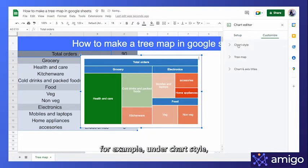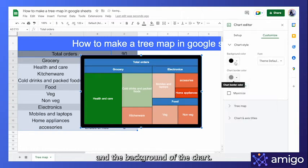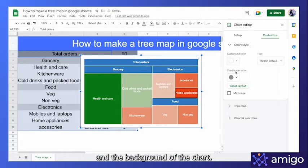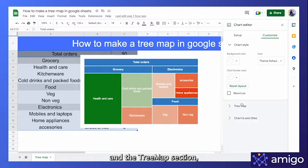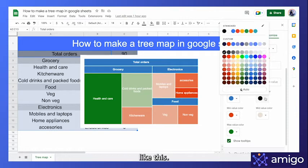For example, under chart style, you can change the color for the border and the background of the chart, and in the tree map section you can change the colors of the sections like this.